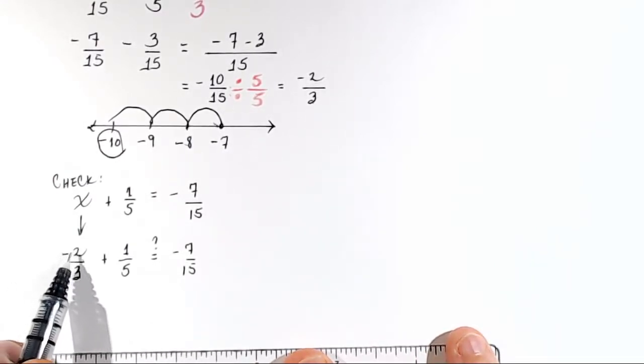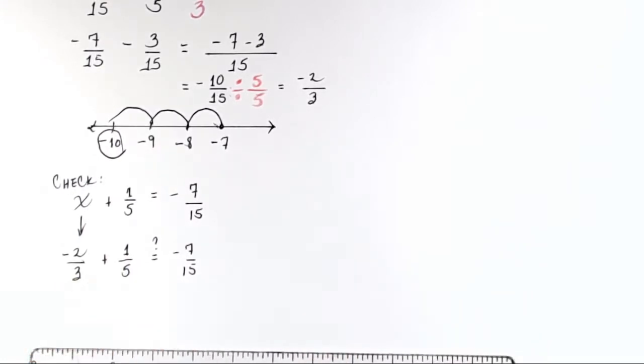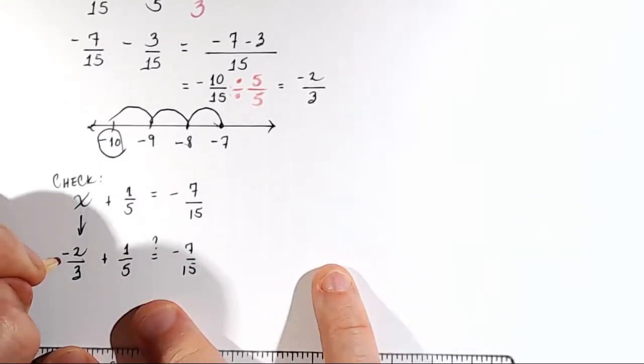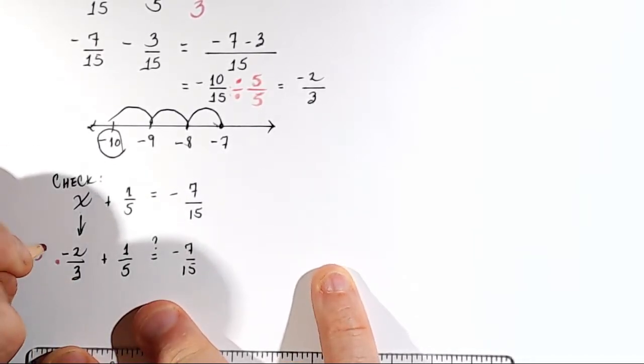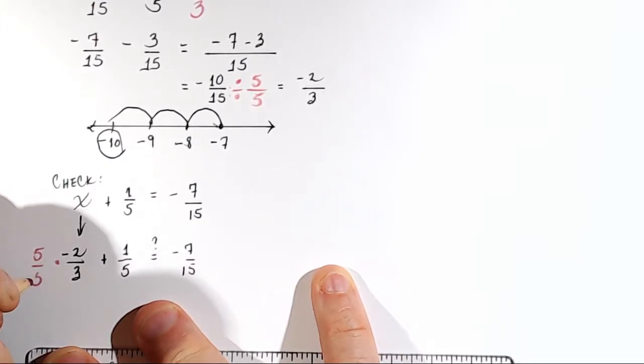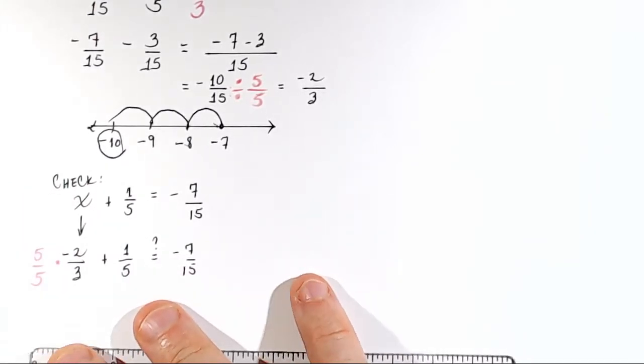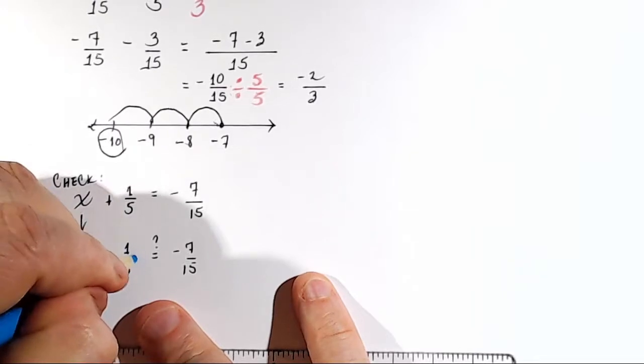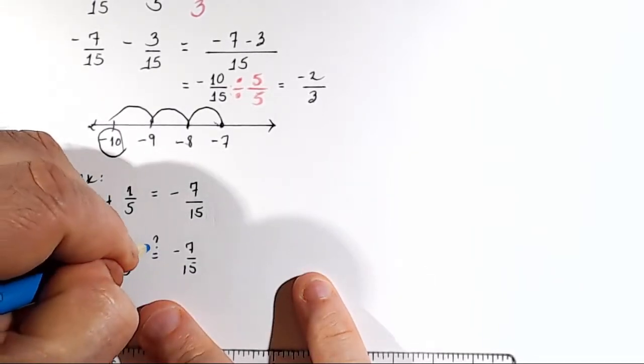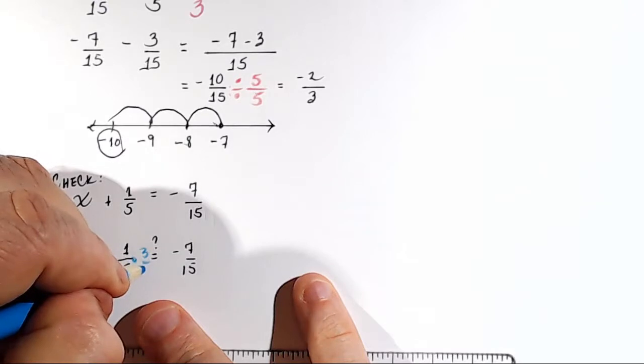Well, in order to add negative 2 thirds to 1 fifth, we have to find a common denominator again between 3 and 5 this time. Well, the common denominator is 15. So what do I have to multiply by 3 to get 15? 5. So I'm going to multiply negative 2 thirds by 5 fifths. And I have to multiply 1 fifth times something. I'll multiply 1 fifth times 3 thirds in order to turn the 5 into a 15.